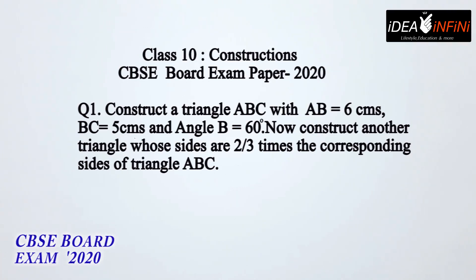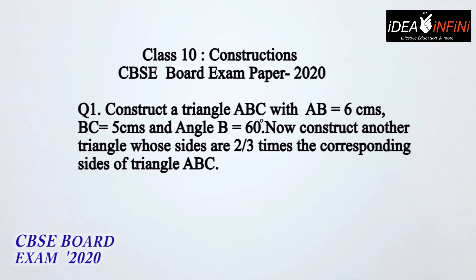The first question is: Construct triangle ABC with AB equal to 6 cm, BC 5 cm, Angle B equals 60 degrees. Now construct another triangle whose sides are 2/3 times the corresponding sides of triangle ABC.